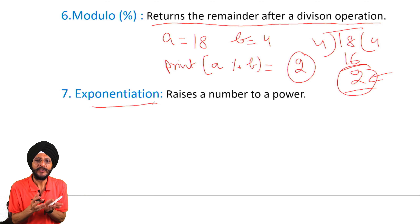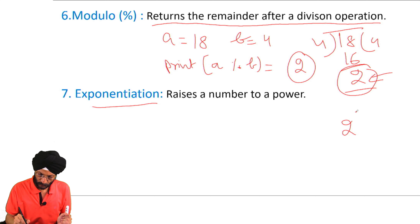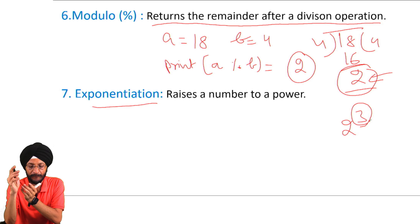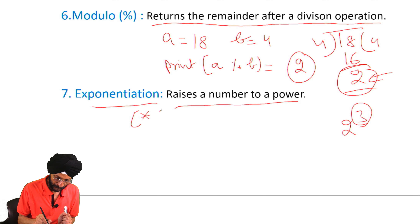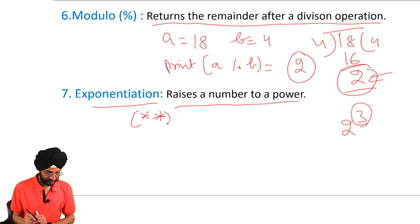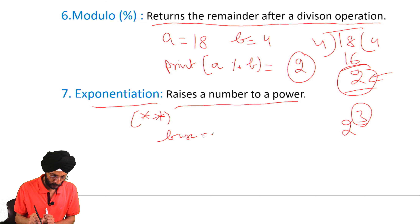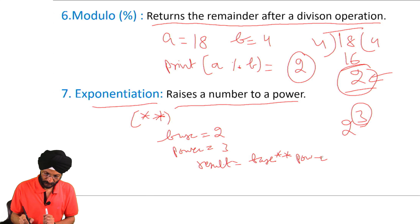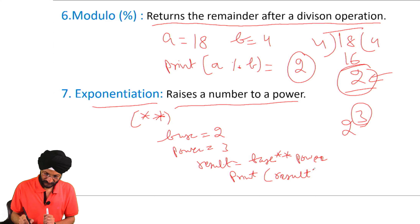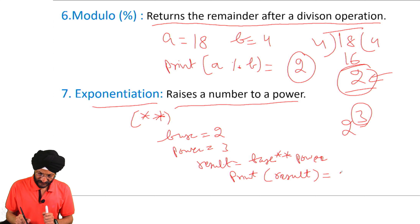Exponentiation — you may have already used this. For example, 2 raised to the power 3. It raises a number to a power and is written using double asterisk symbols in Python. Suppose base is equal to 2 and power is 3. Using the print function with base raised to the power, 2 raised to the power 3 gives us 8.